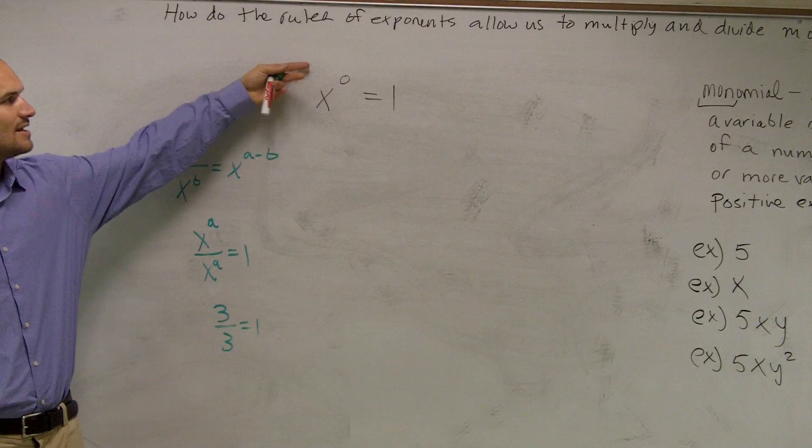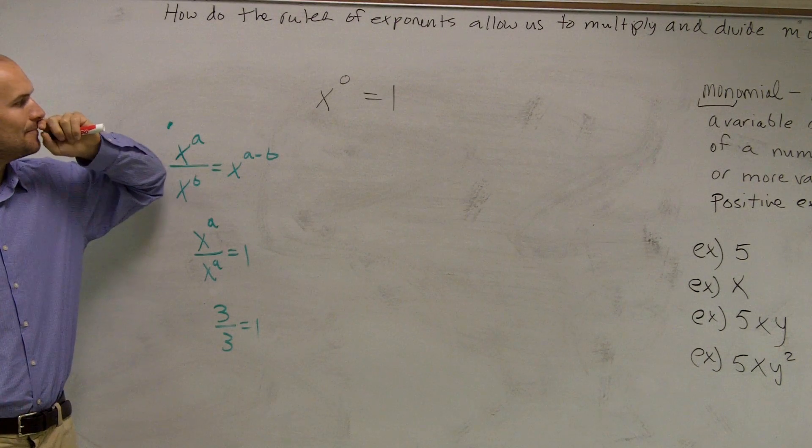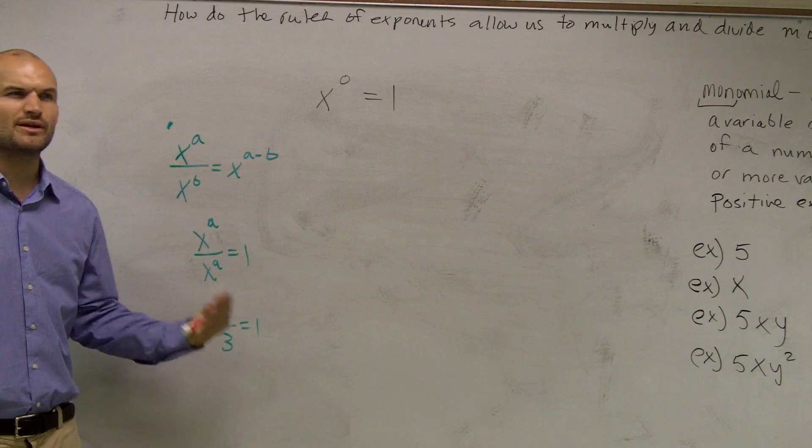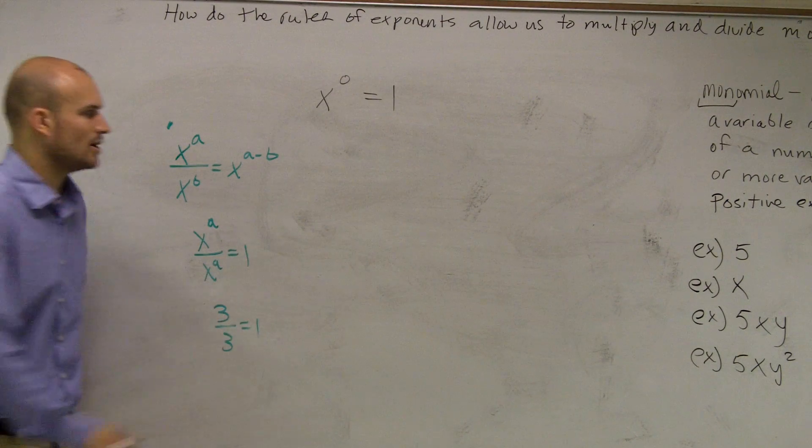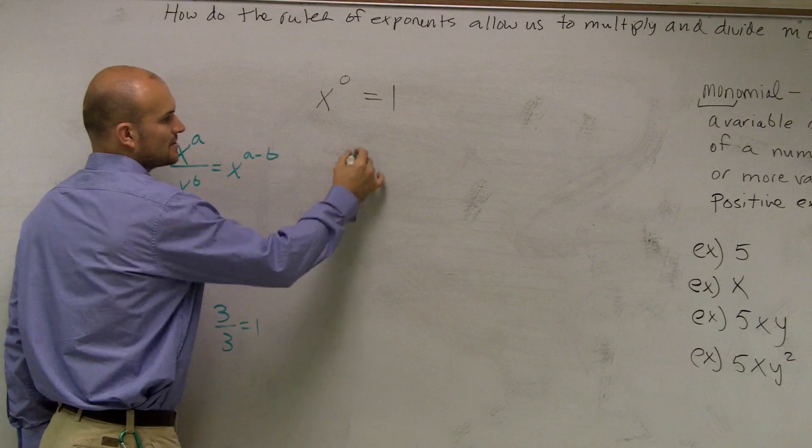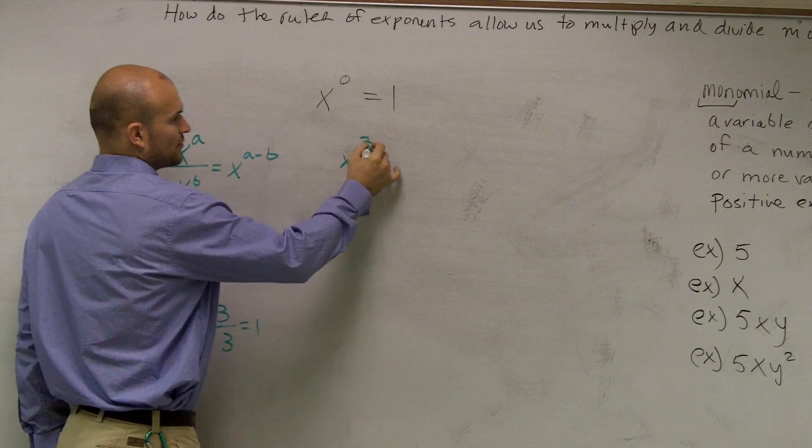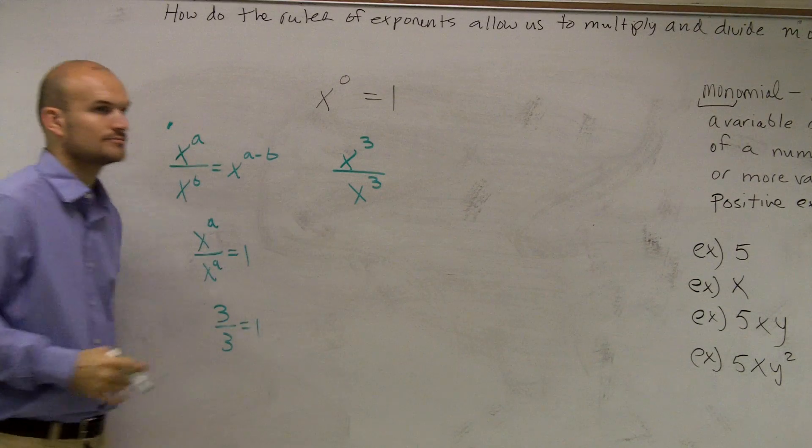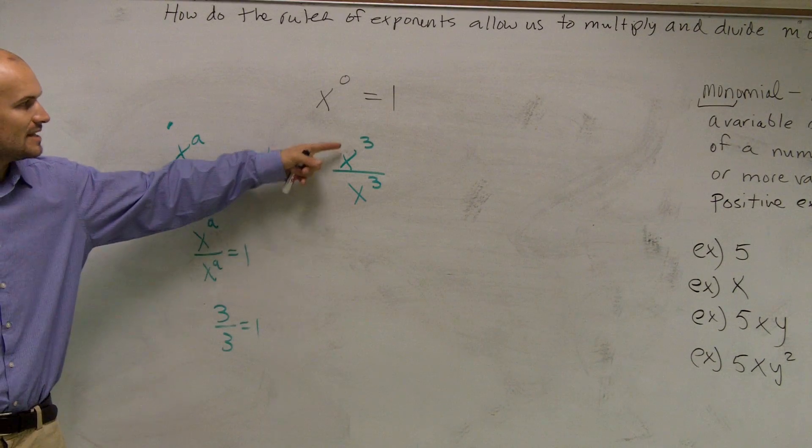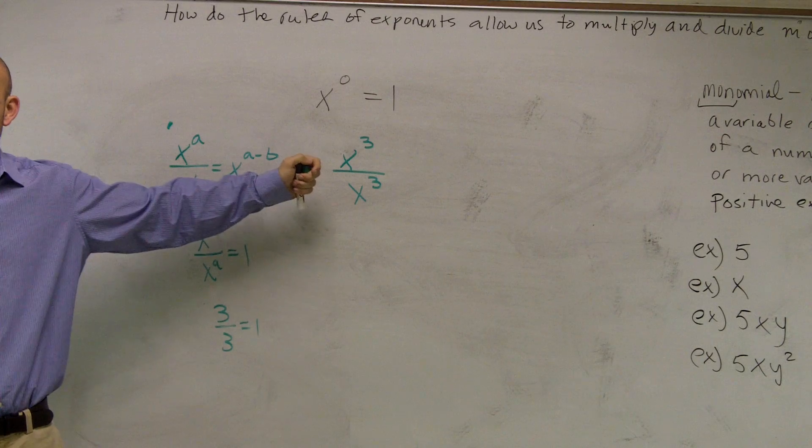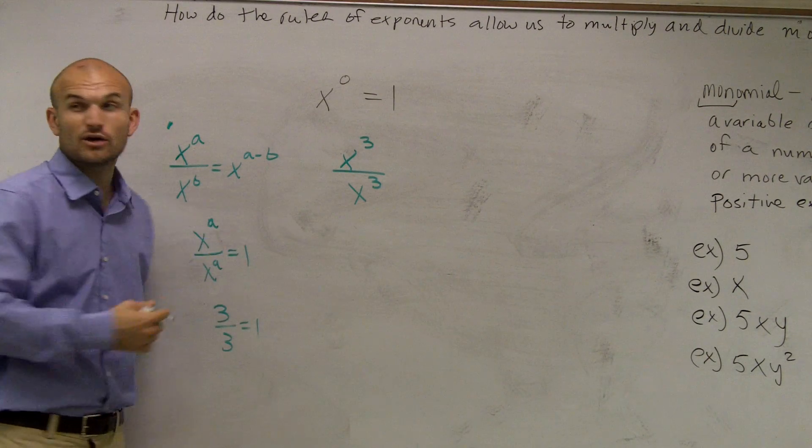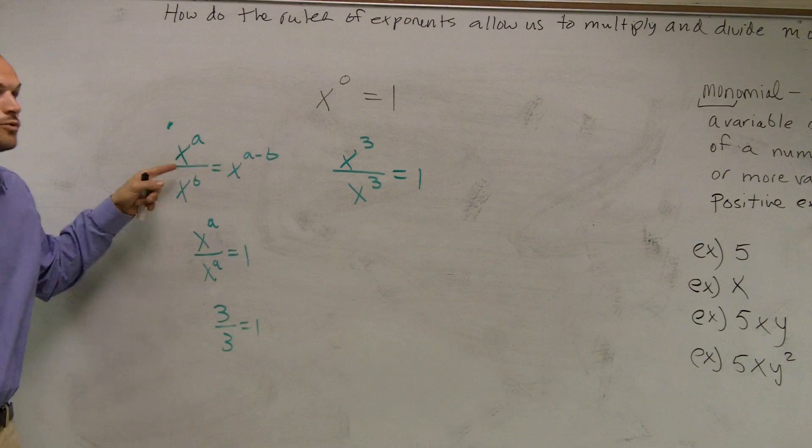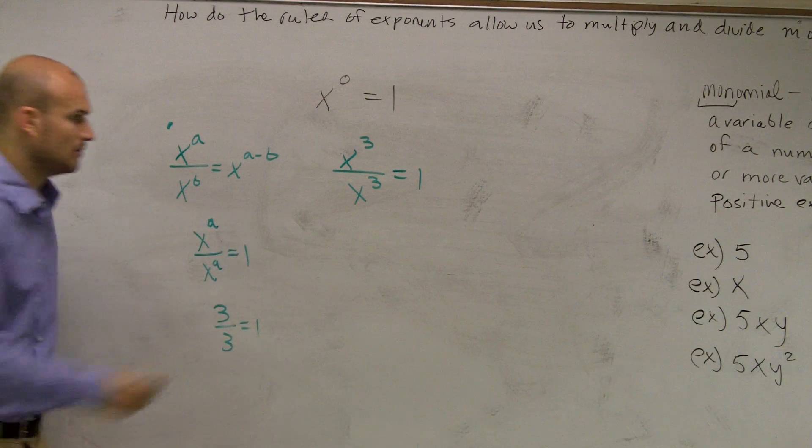So what I'm going to do is, how could I maybe rewrite x to the 0 so it would express something? Well, what if I wrote out x to the 3 divided by x to the 3? We know that equals 1, right?